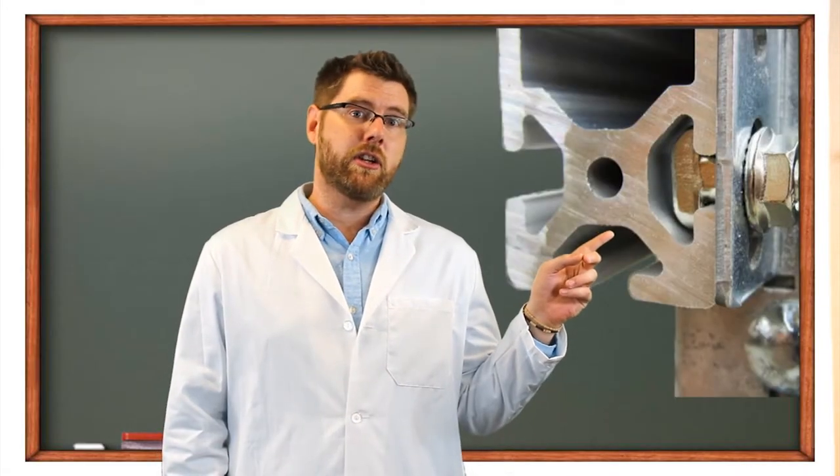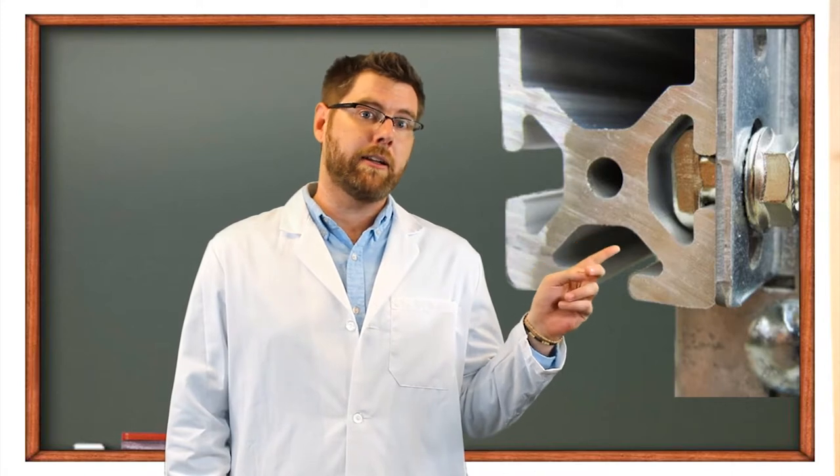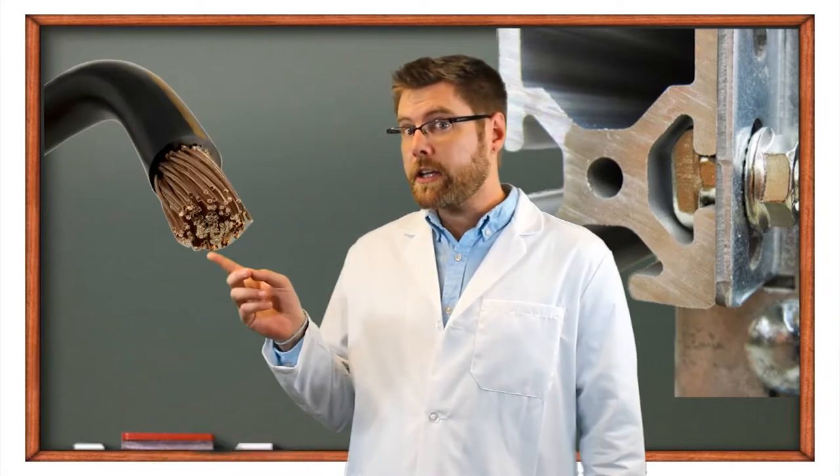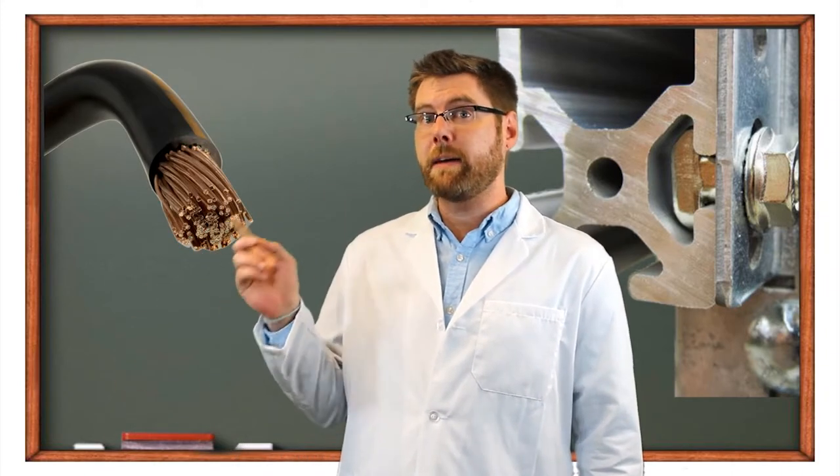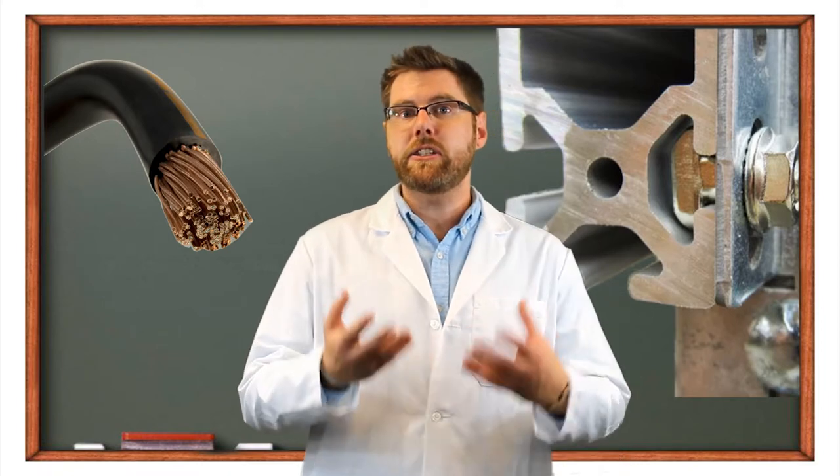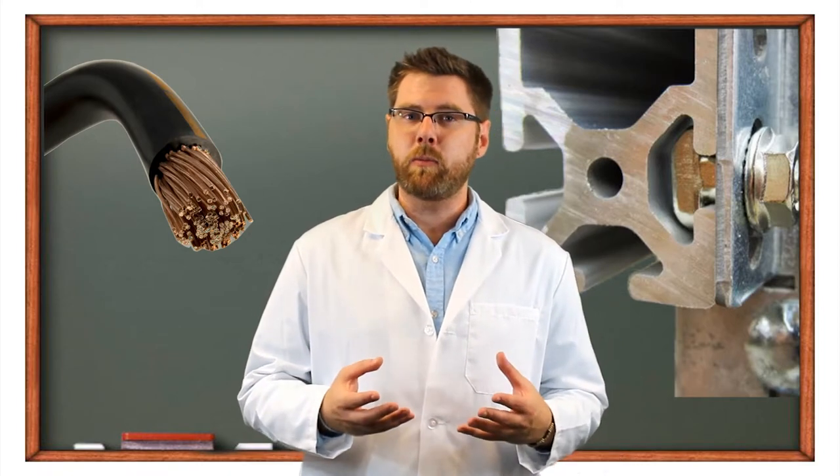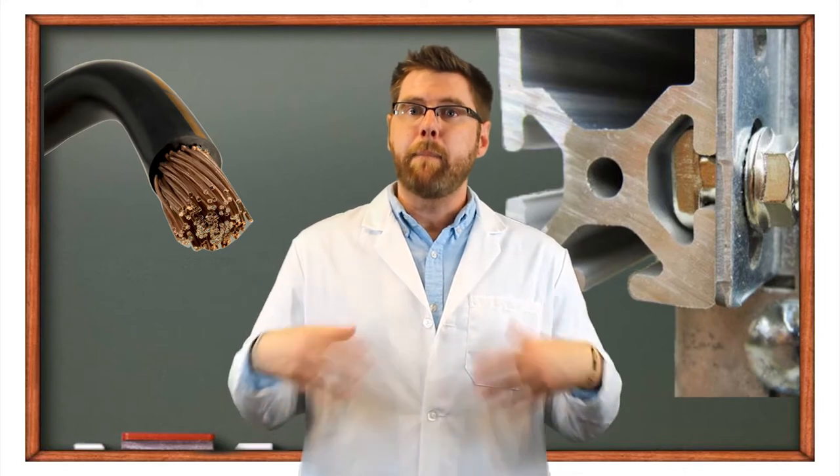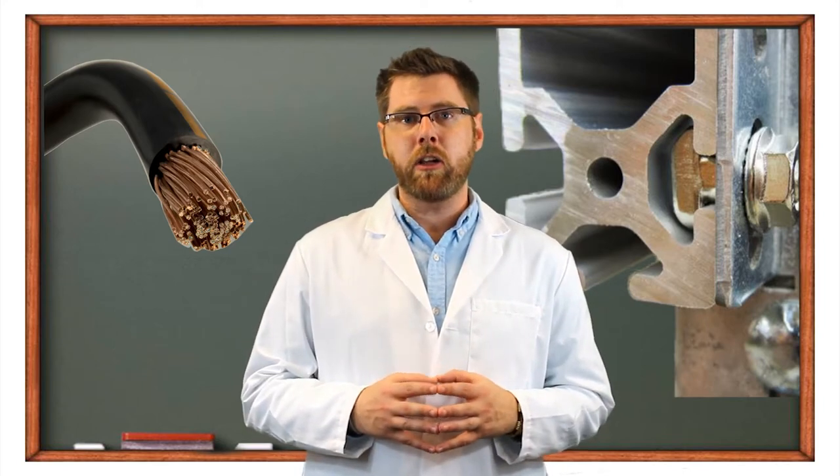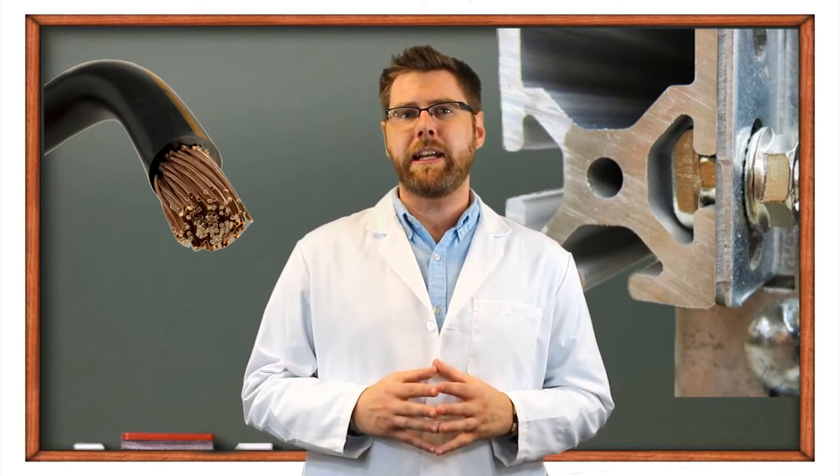This is the cross-sectional area of a typical aluminum rail. This is the cross-sectional area of a number six gauge copper ground conductor. Since the cross-sectional area of the aluminum rail is so much bigger, bonding to an already grounded rail creates a much better electrical connection.